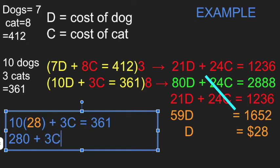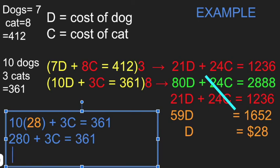Plus 3 times the price of a cat equals $361. Subtract $280 from both sides. Three times the price of a cat... the price of a cat is... 81. Three times the price of a cat is $81. Split that, one cat is going to cost $27.